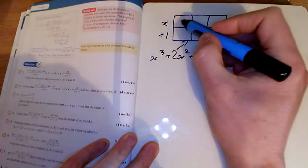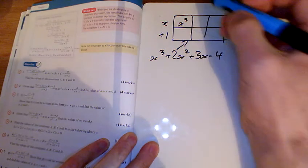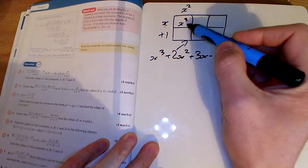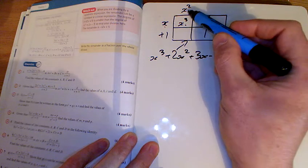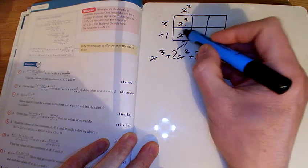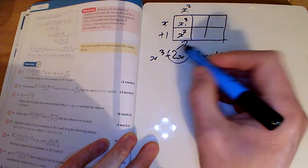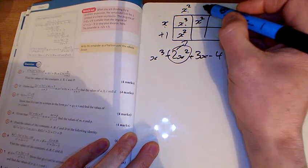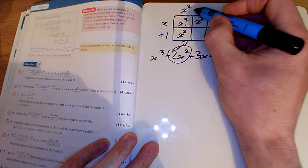We need x³ here. To get that, we must have x² at the top because x² times x gives x³. x² times 1 gives x², but that's not enough. We need 2x², so I need another x² here. That must come from an x there, since x times x gives x².